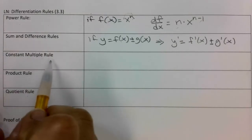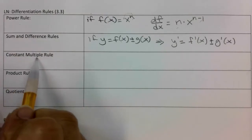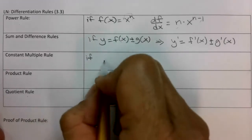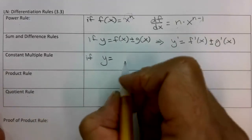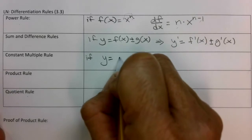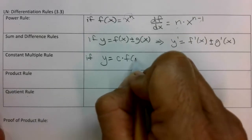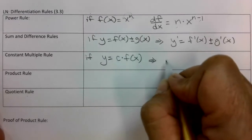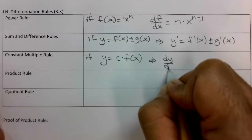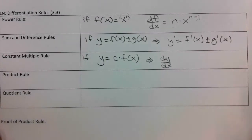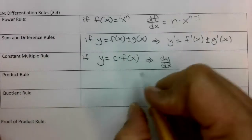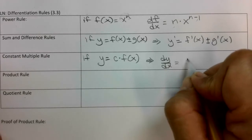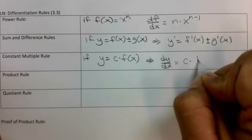Constant multiple rule — that's when you have a number multiplying. So if y equals c times f of x, then dy/dx — I'm just going back and forth between the notation so that you know you can use whichever one — the constant multiple just kind of tags along. It plays the same role: c times df/dx.